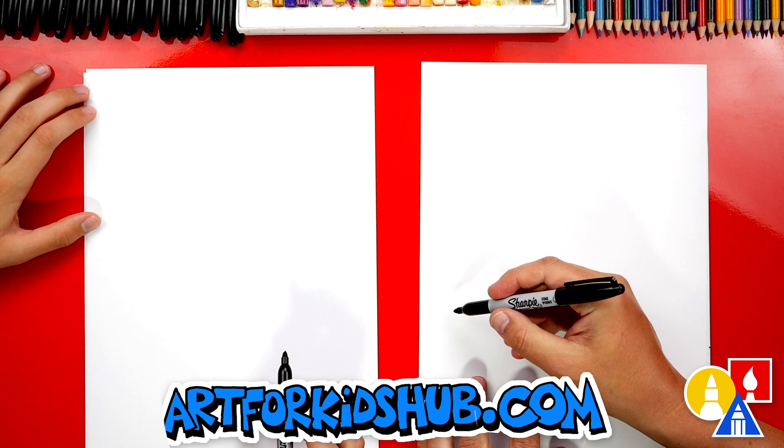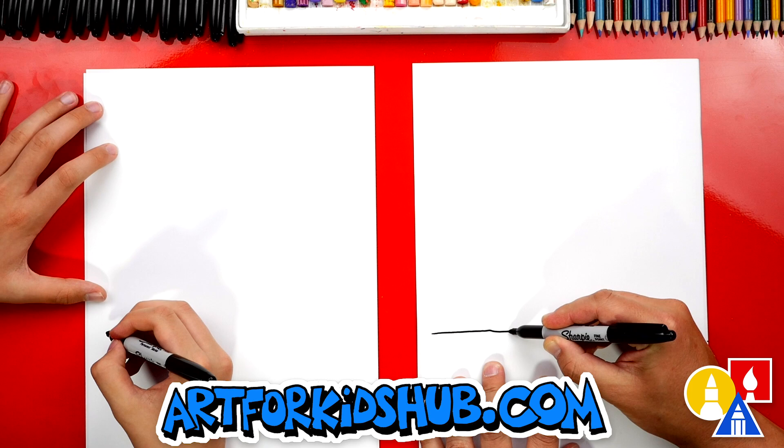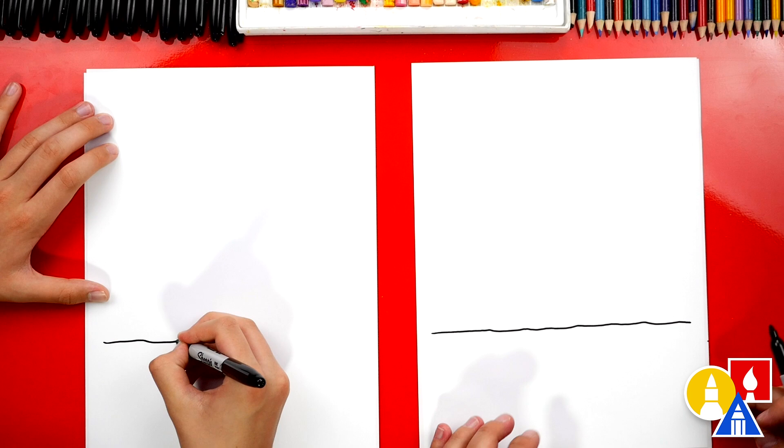We're first gonna draw the water. We're gonna draw it down here towards the bottom of our paper and you could draw a little wobbly line since it's water. I started drawing a straight line. Good! That's awesome!